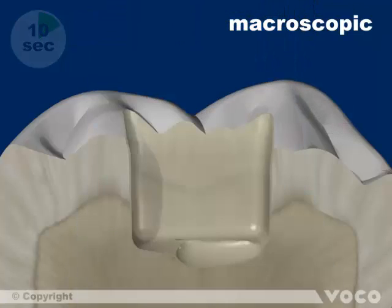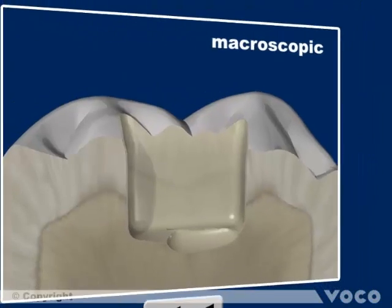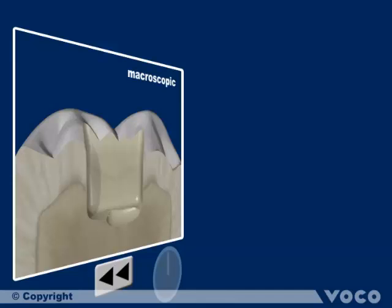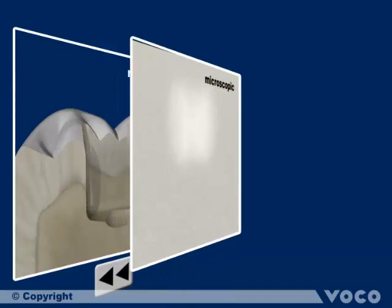The main components of the tooth substance, dentine and enamel, react differently after the application of a universal adhesive used in self-etch mode. Let's rewind the video and have a closer look at the microscopic reaction of the adhesive on enamel as well as on dentine.